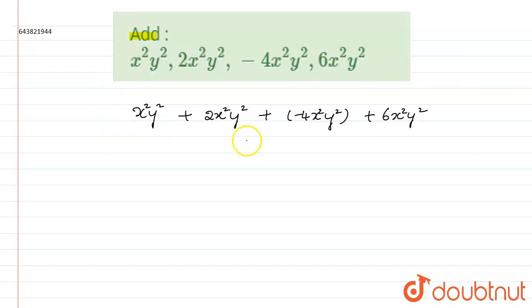Now first we will add which are positive numbers. So in this x square y square, 2x square y square and 6x square y square are positive terms. So let us add them first.